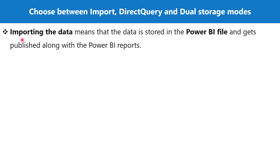Now let's explore the Import data storage mode. Importing the data means the data is stored in the Power BI file and gets published along with the Power BI report. When we publish the Power BI report to Power BI service, a dataset is created that represents your data model. I'm going to show towards the end of this video how a Power BI file is loaded into system memory so you can understand the data storage mode in practice.